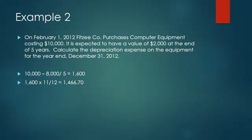In the second example, the computer equipment was purchased later in the fiscal year — it wasn't purchased at the beginning. Finding the depreciable cost and annual depreciation expense is about the same, but you have to do one more step. After finding the annual depreciation, divide it by the number of months the asset has been depreciated out of 12, then multiply the result by the annual depreciation.